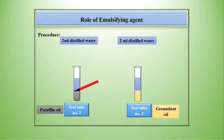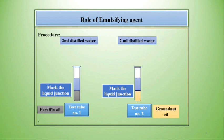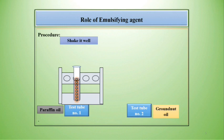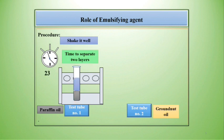Mark the junction of the 2 liquids in test tube number 1 and also mark the junction of the 2 liquids in test tube number 2. Then shake well test tube number 1 and keep it in the test tube stand. Start the stopwatch and record the time required to separate the 2 layers of water and oil in test tube number 1.